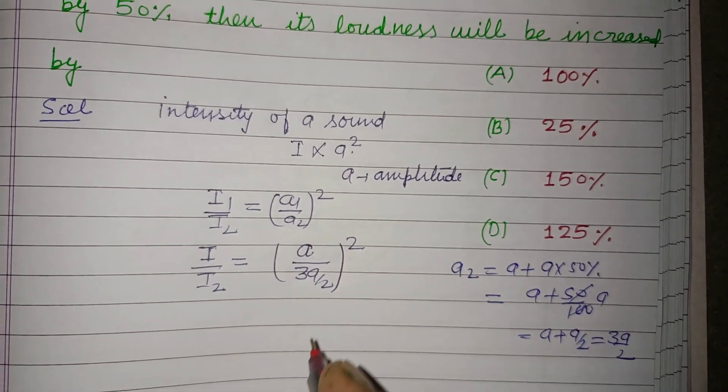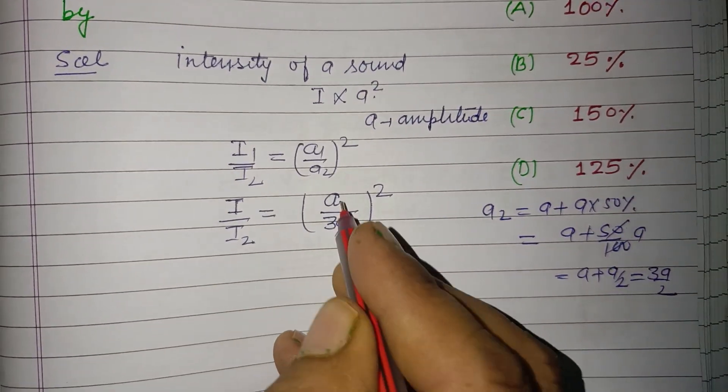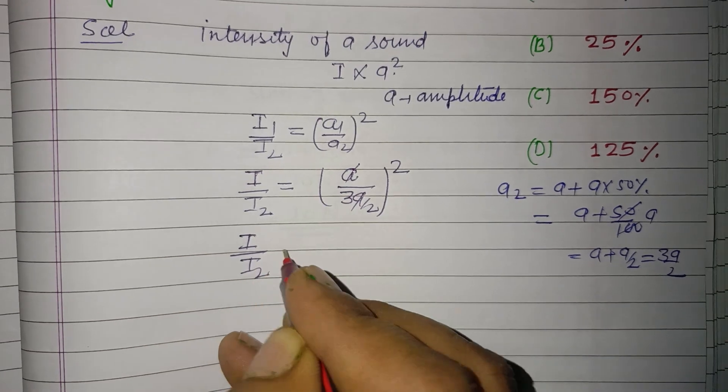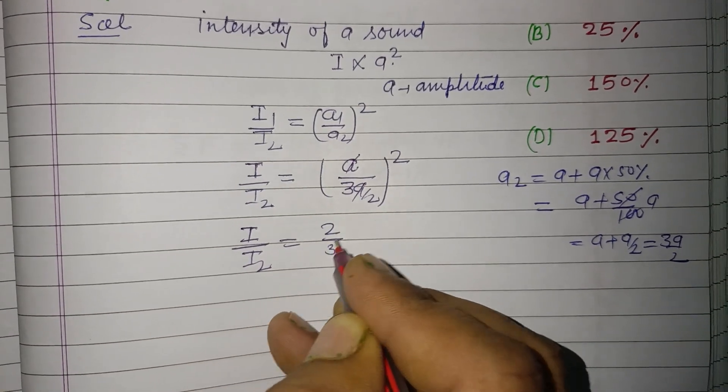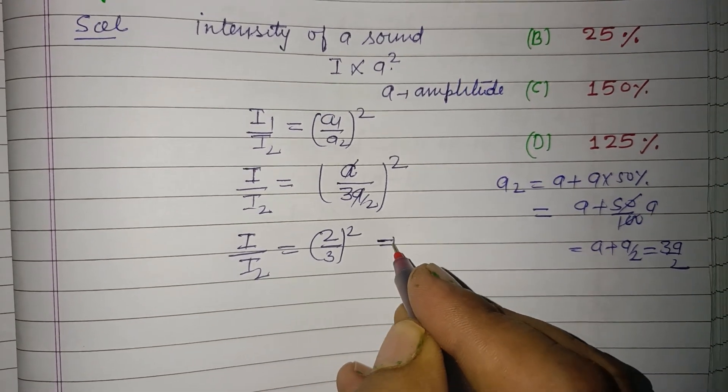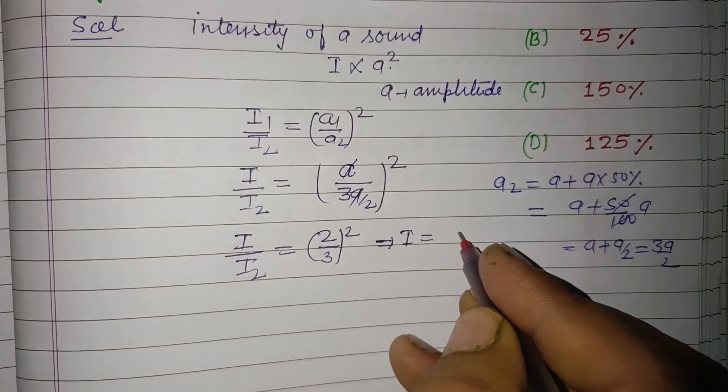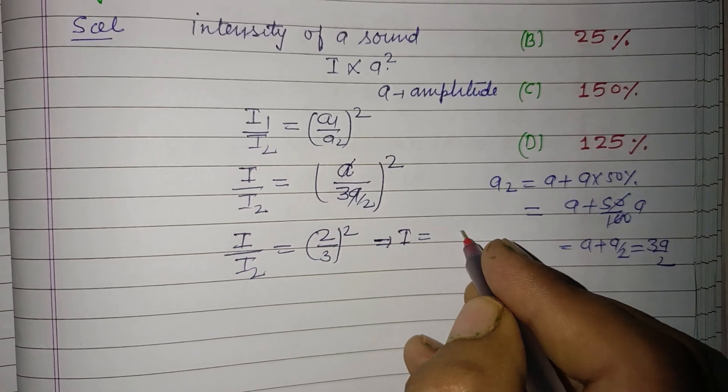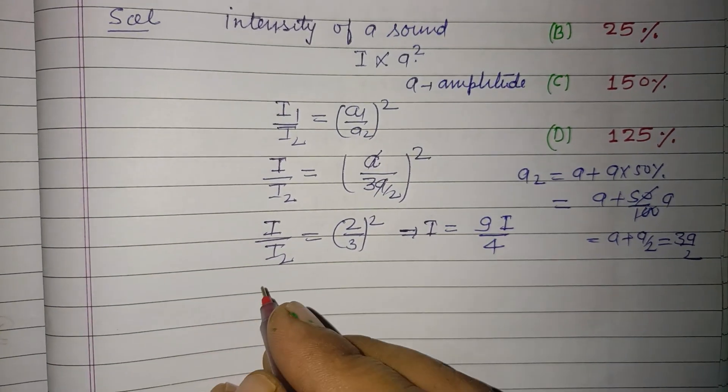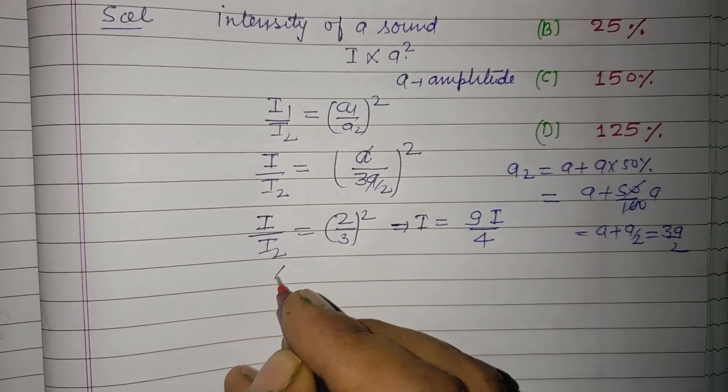a cancels, we got I over I2 equals 2 upon 3 whole squared, or I2 equals 9I upon 4. Now change in intensity.